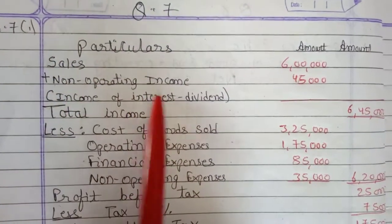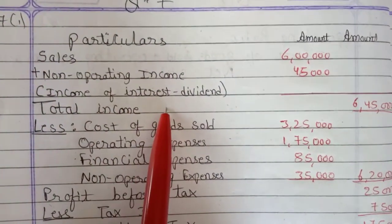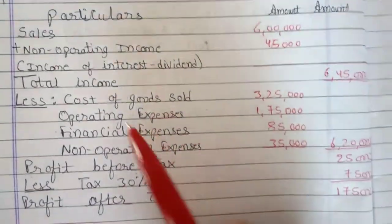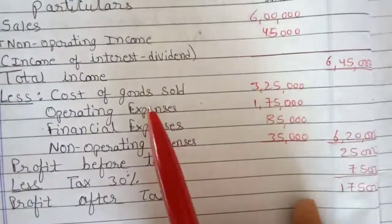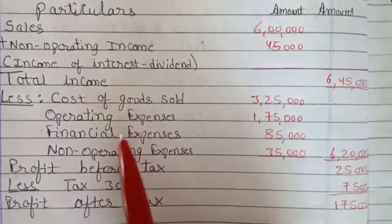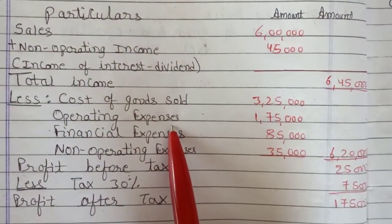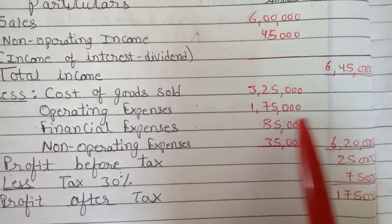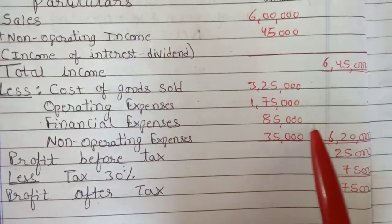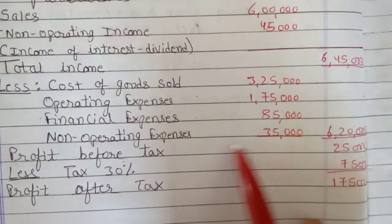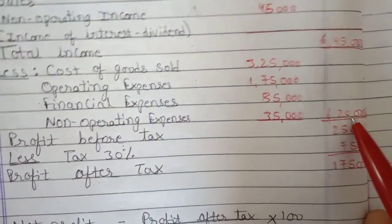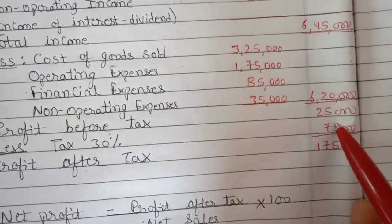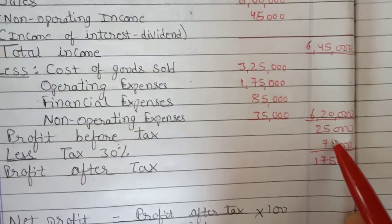Sales plus non-operating income — that is income from interest and dividend — gives total income of Rs. 6,45,000. We then deduct expenses: cost of goods sold Rs. 3,25,000, operating expenses Rs. 1,75,000, financial expenses Rs. 85,000, and non-operating expenses Rs. 35,000. Deducting total expenses from total income gives profit before tax of Rs. 25,000.